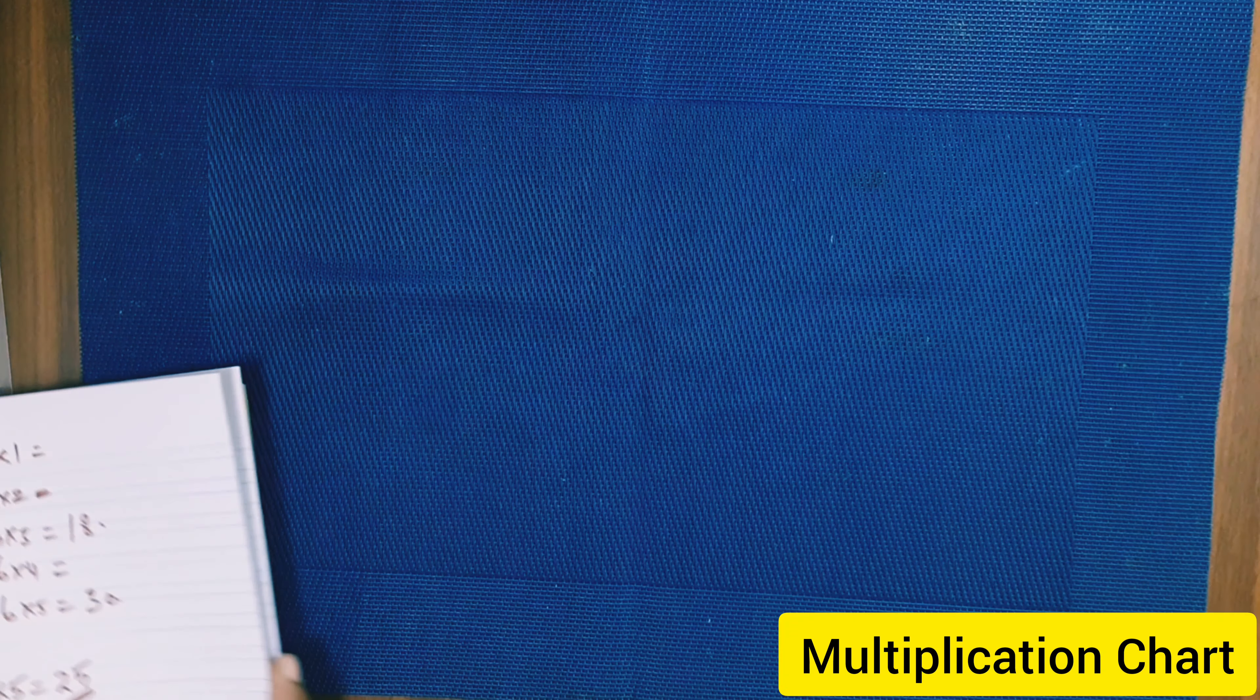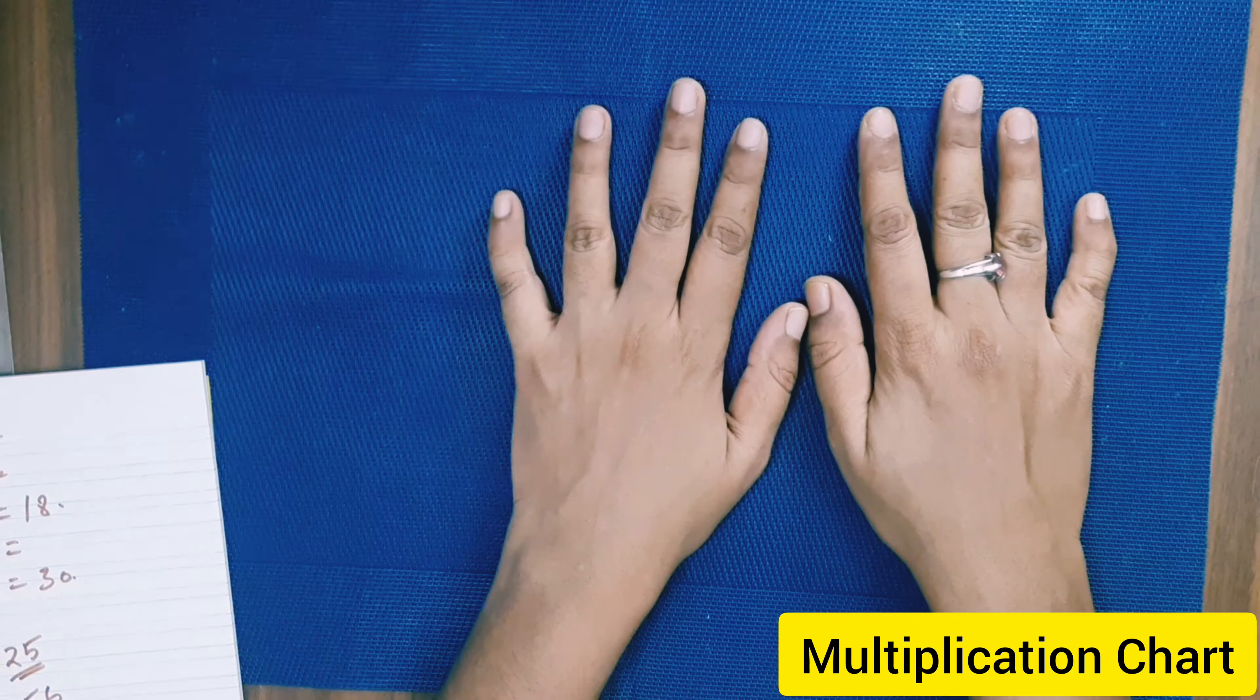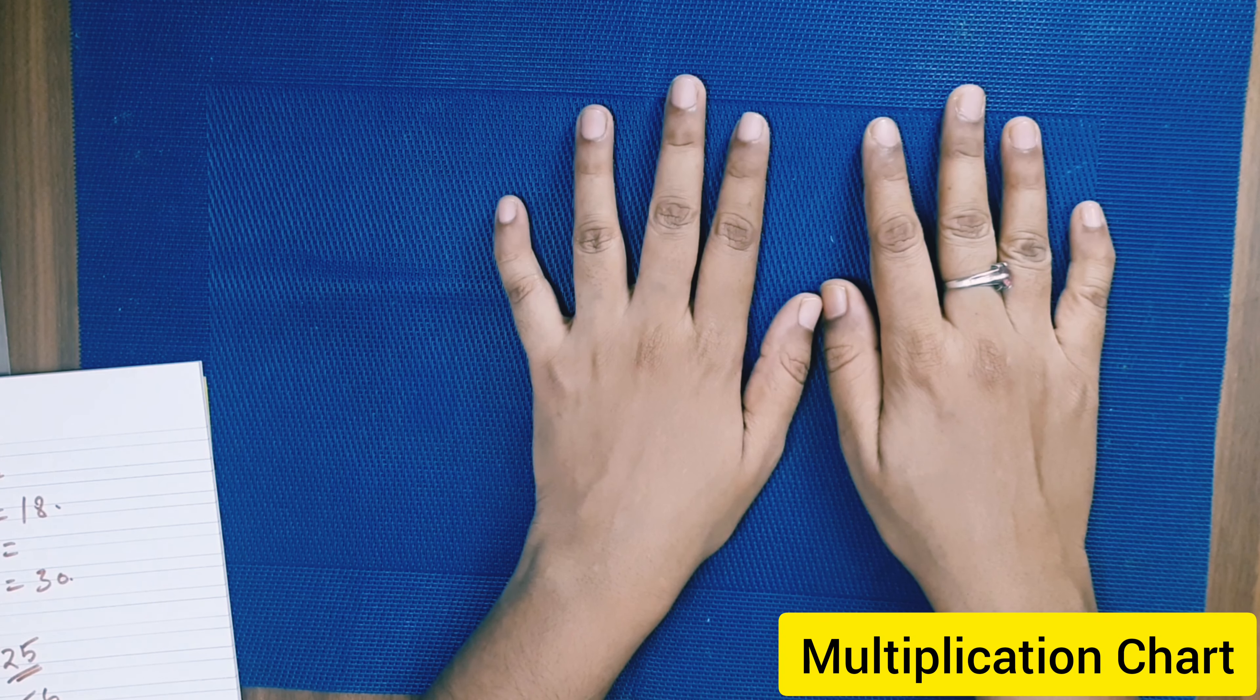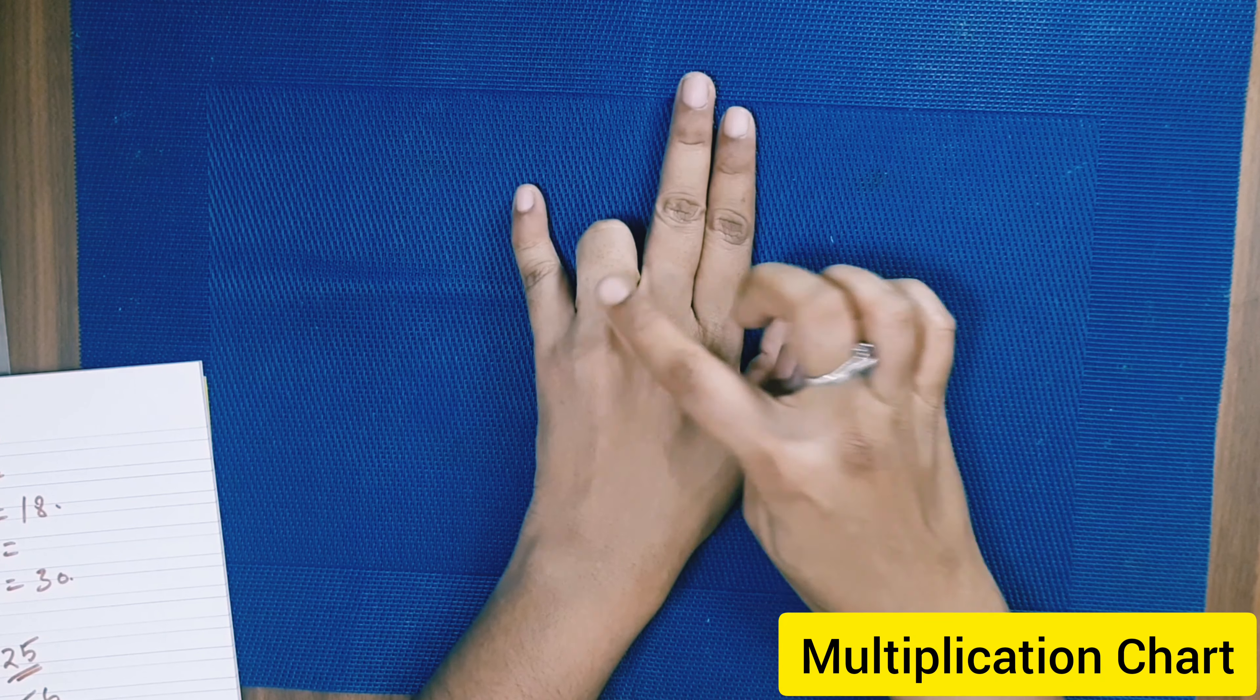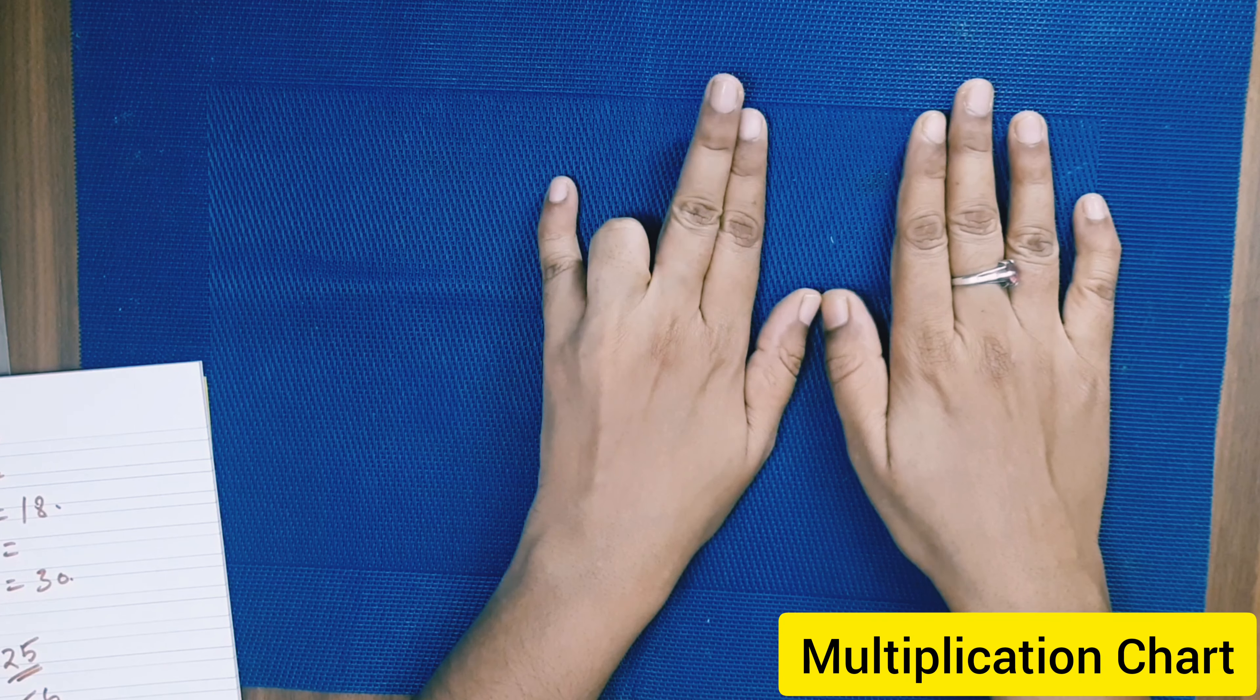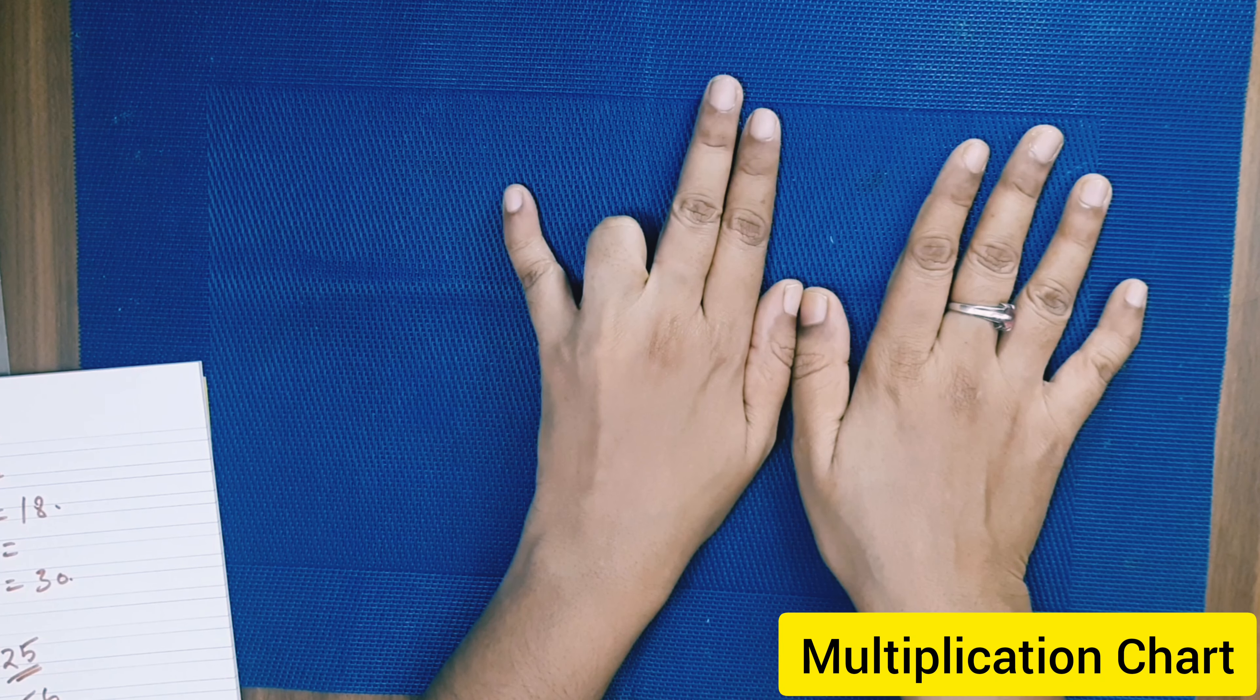And I will also give you a quick tip for 9 tables. Just you need the 10 fingers. Suppose it's 9 multiplied by 2. Ask the child to fold the finger in the second place. Now 1, and if you count these fingers it's 8. So the answer is 18.